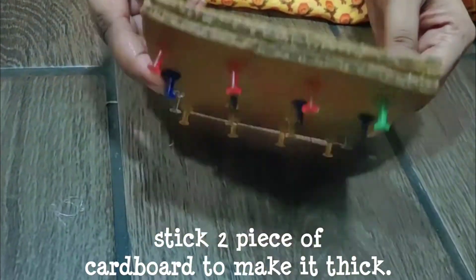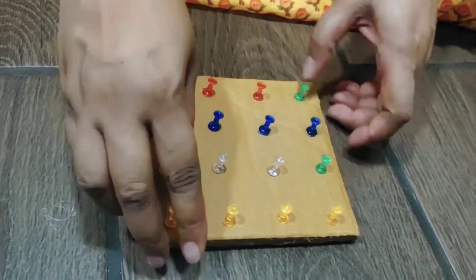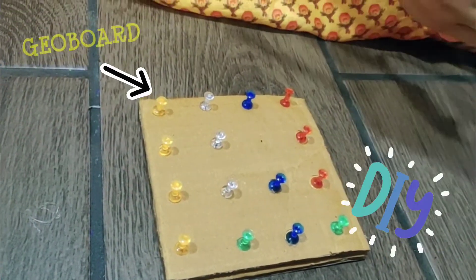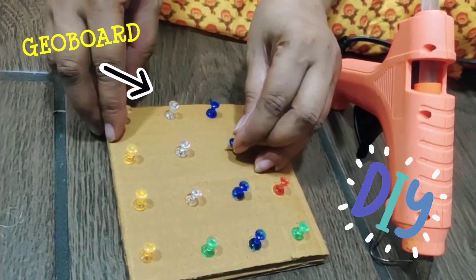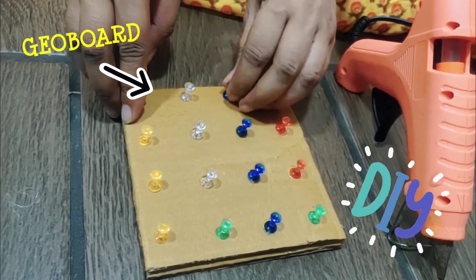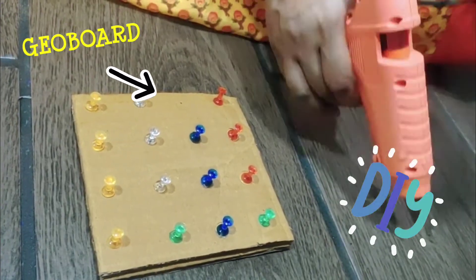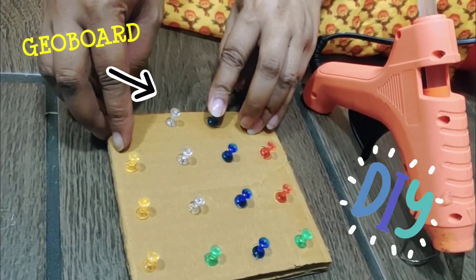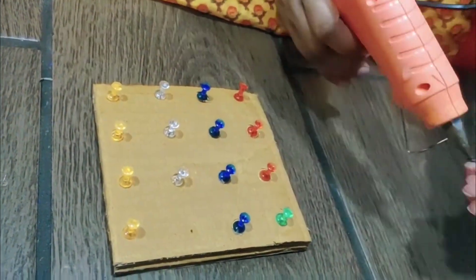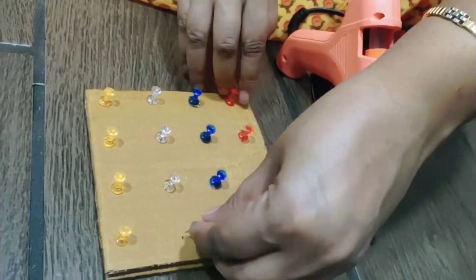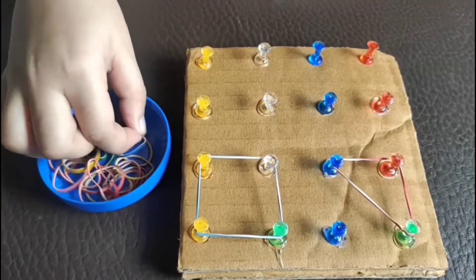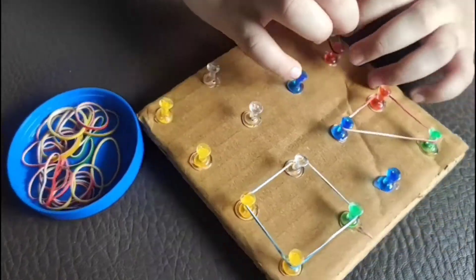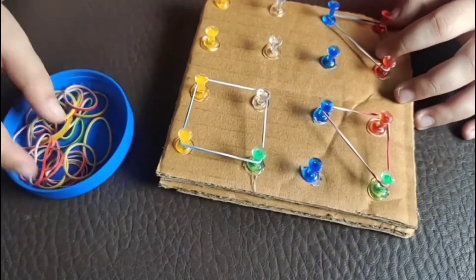For the second one, take a cardboard and put both pins all over it, securing them with glue. Now teach the child to make patterns like lines and shapes on it with elastic bands.